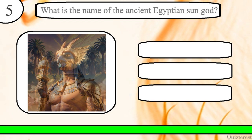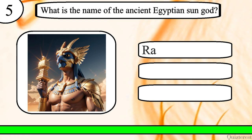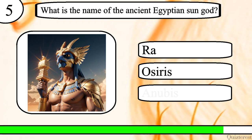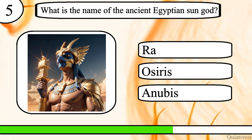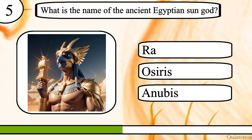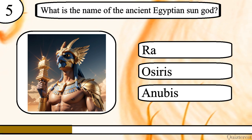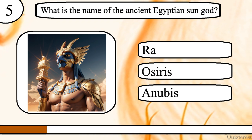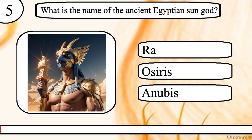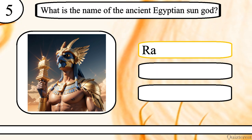Question 5. What is the name of the ancient Egyptian sun god? Ra, Osiris or Anubis? The correct answer is Ra.